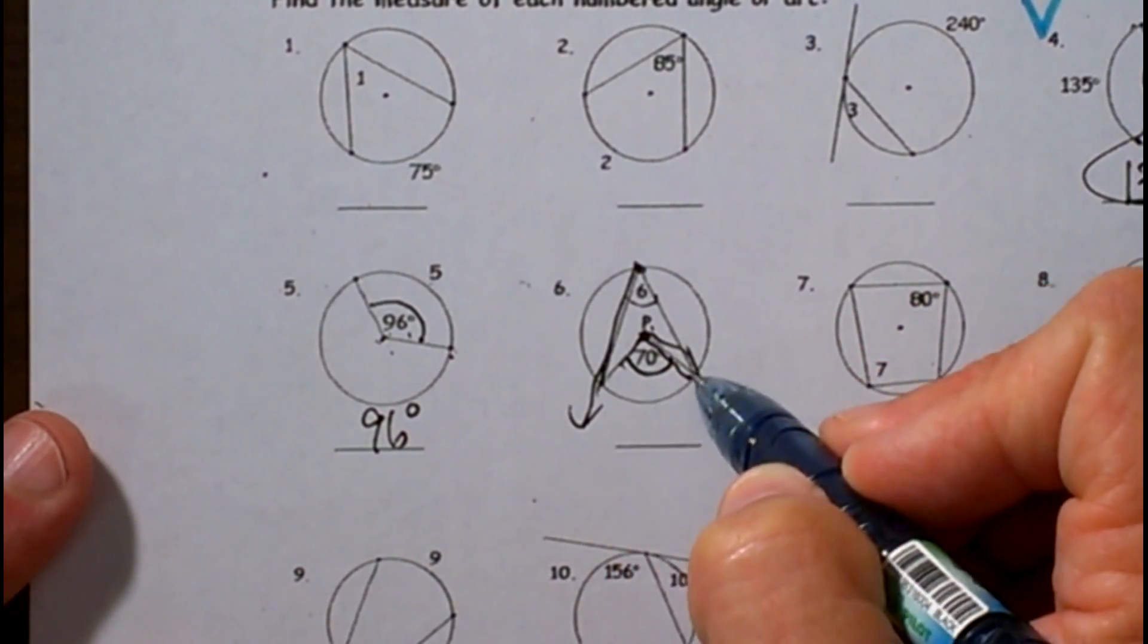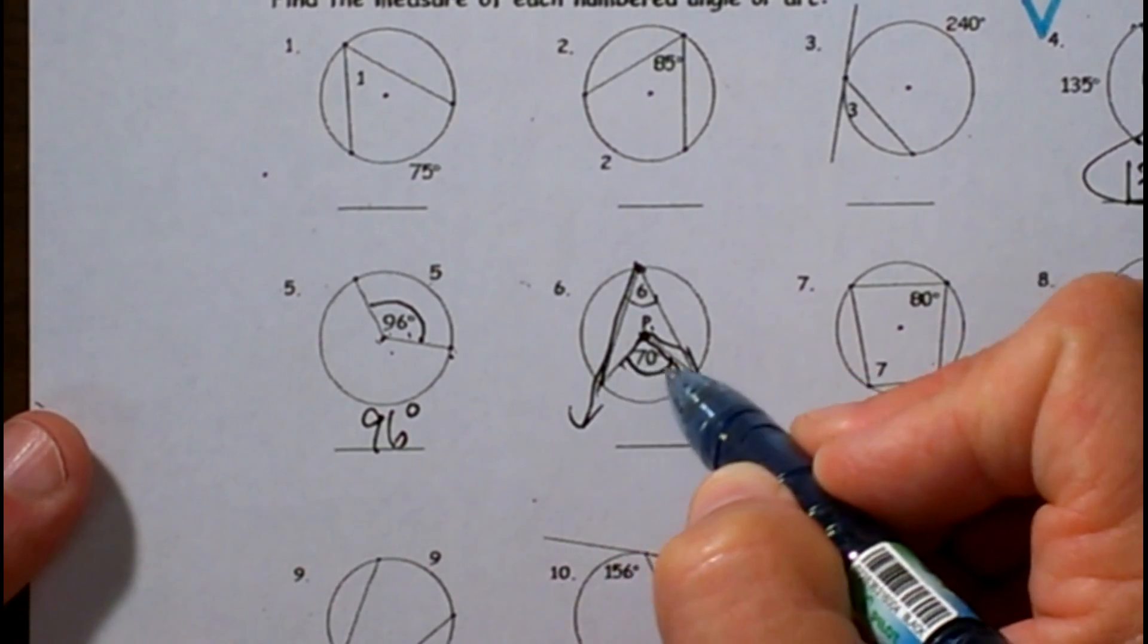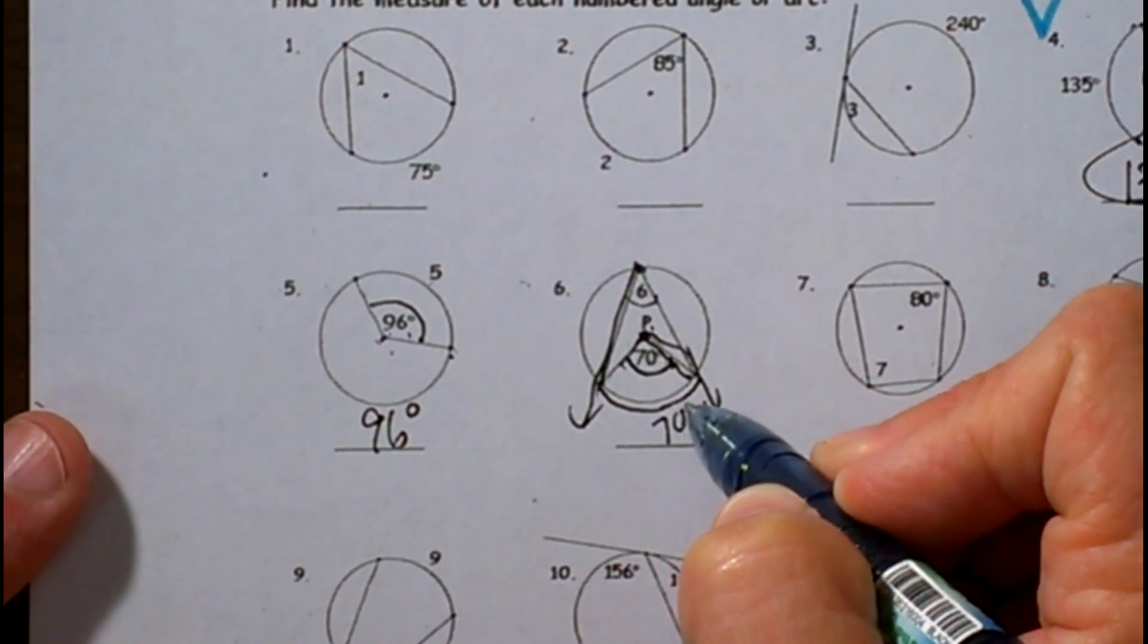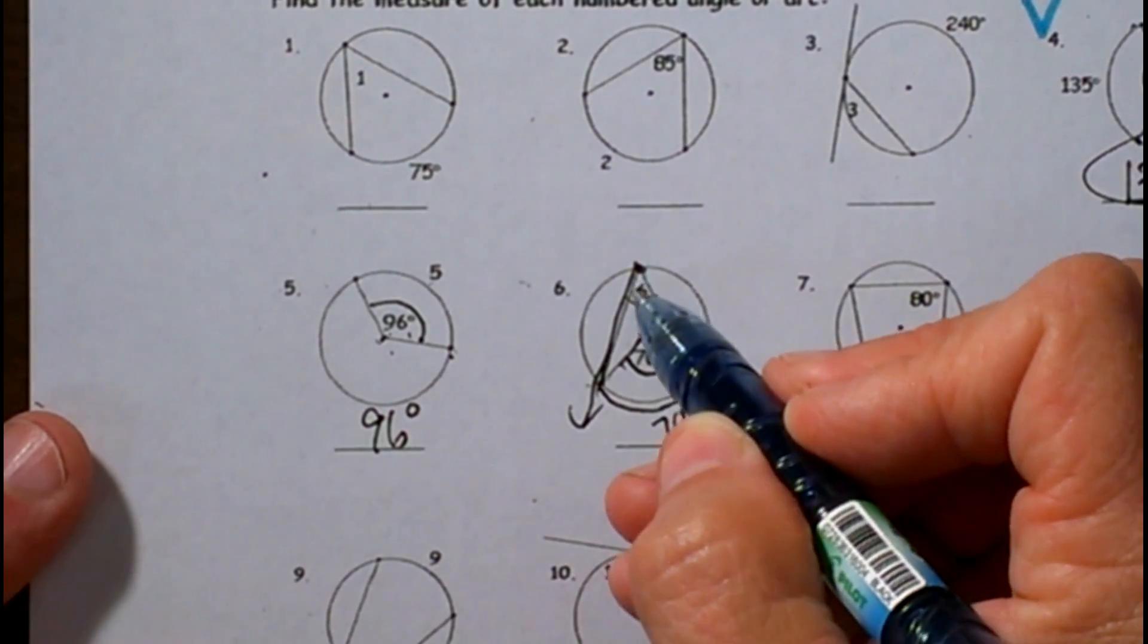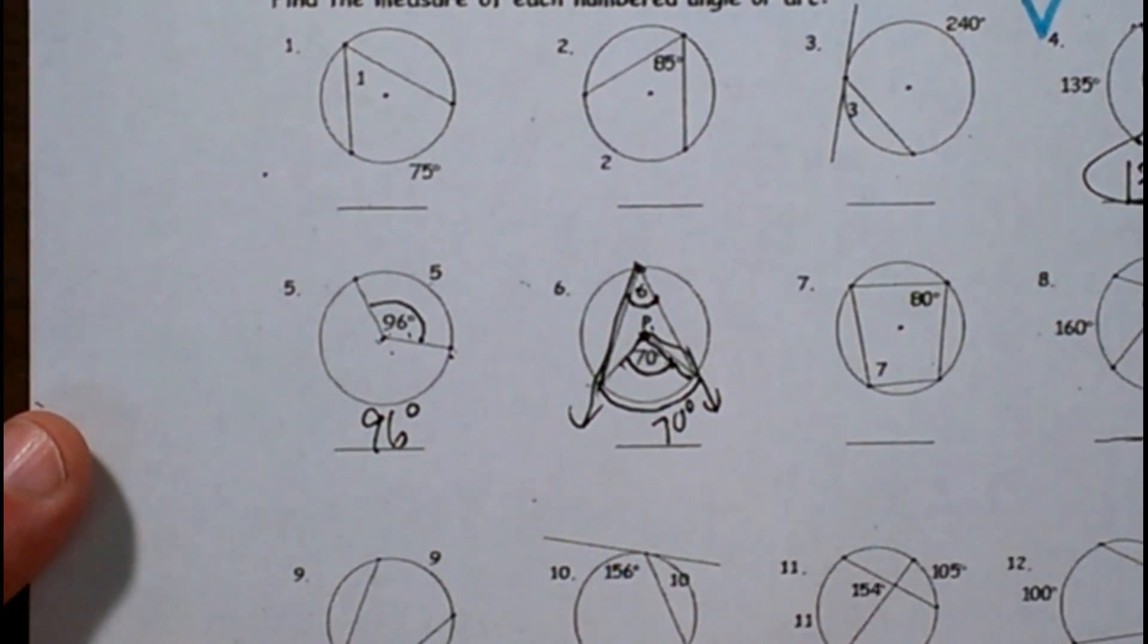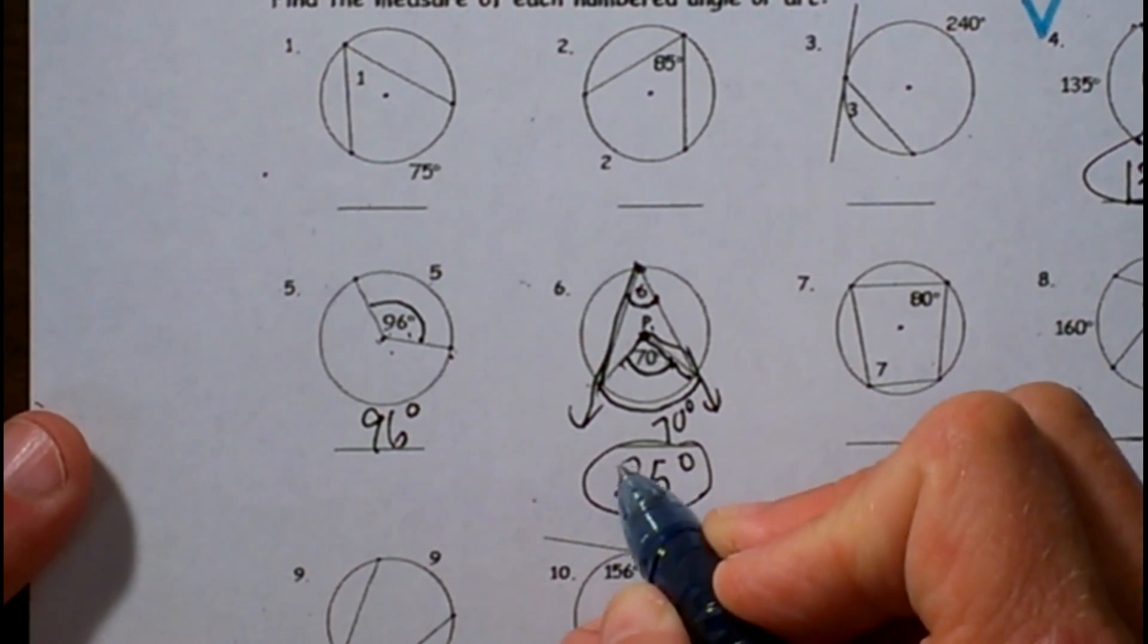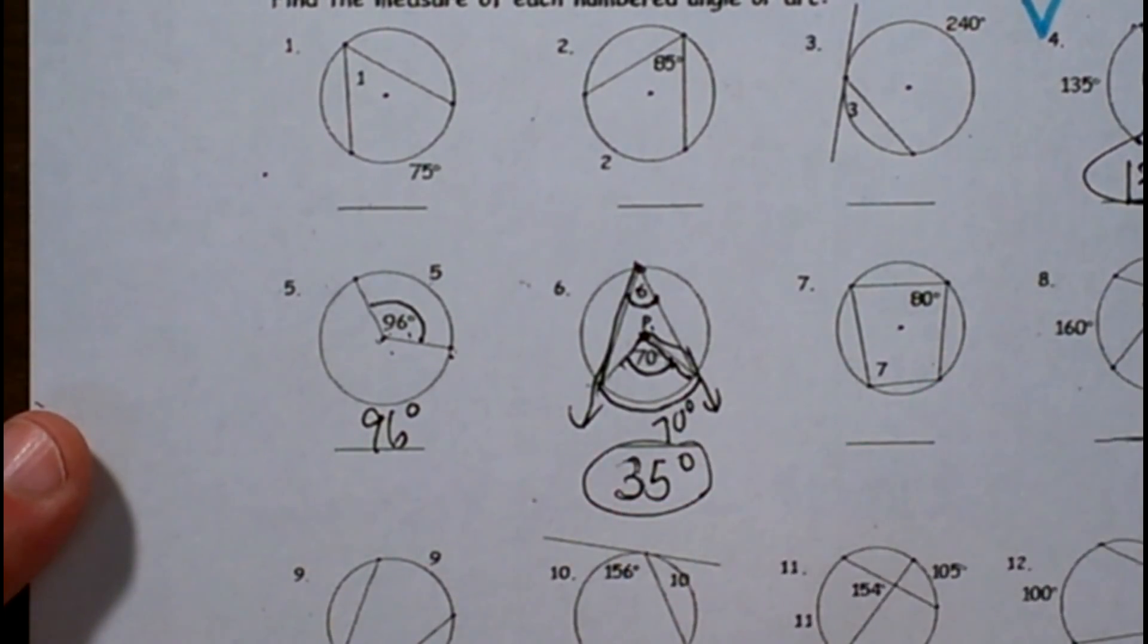So we need to know this intercepted arc. Well, this angle here is 70 and it's central, so that means the arc is 70. But then I have to go back to the inscribed angle which is half. That means the answer is 35. It's half of the intercepted arc.